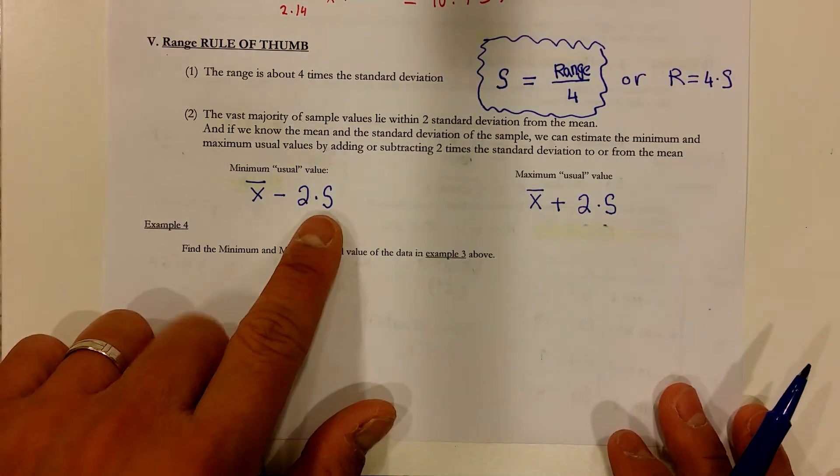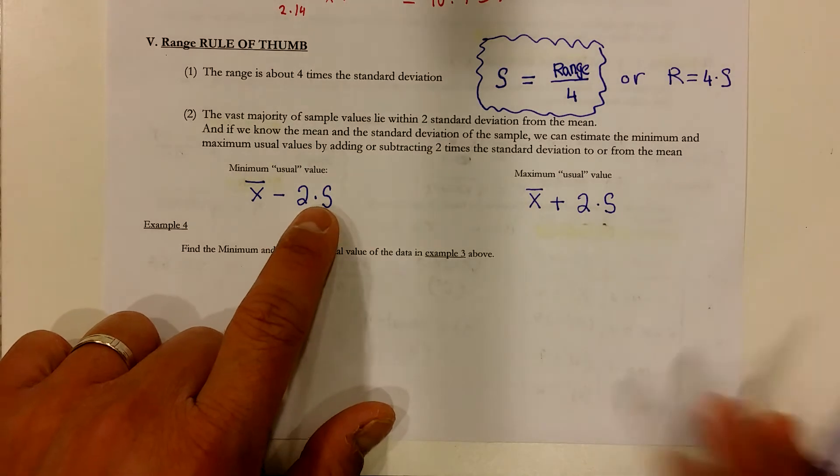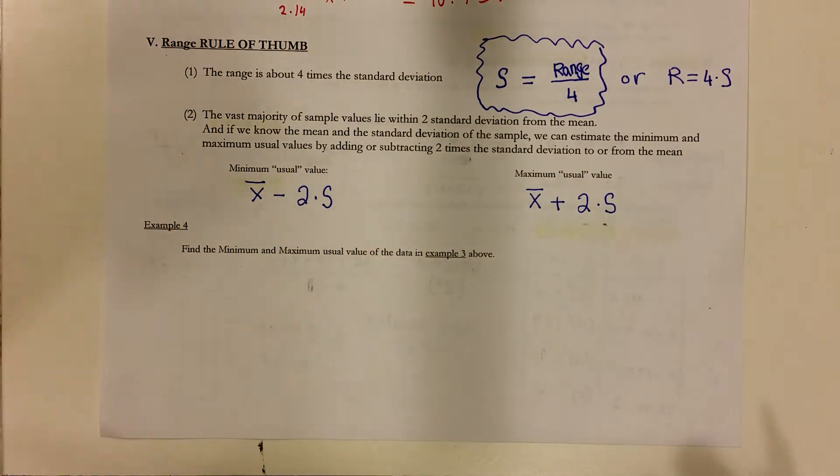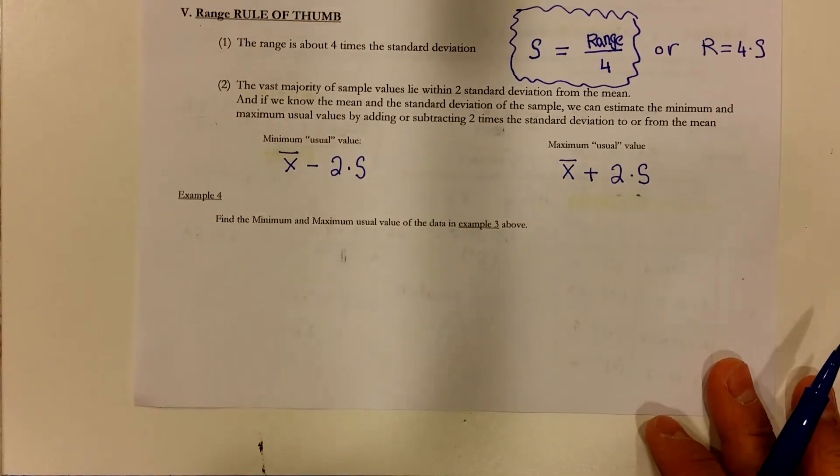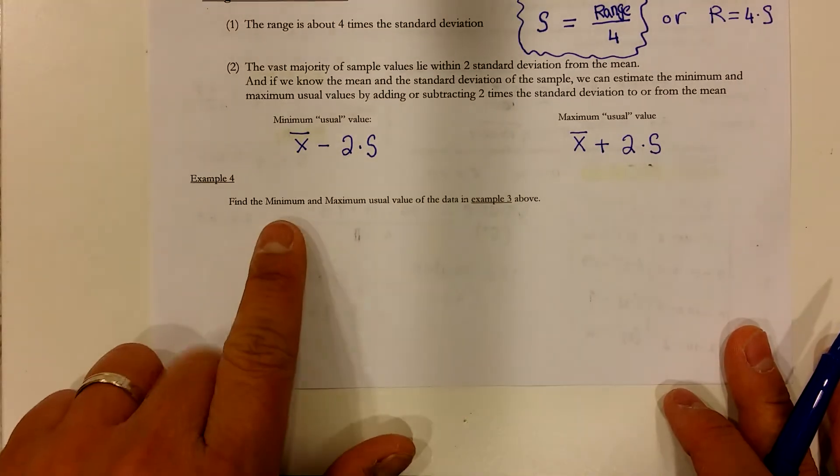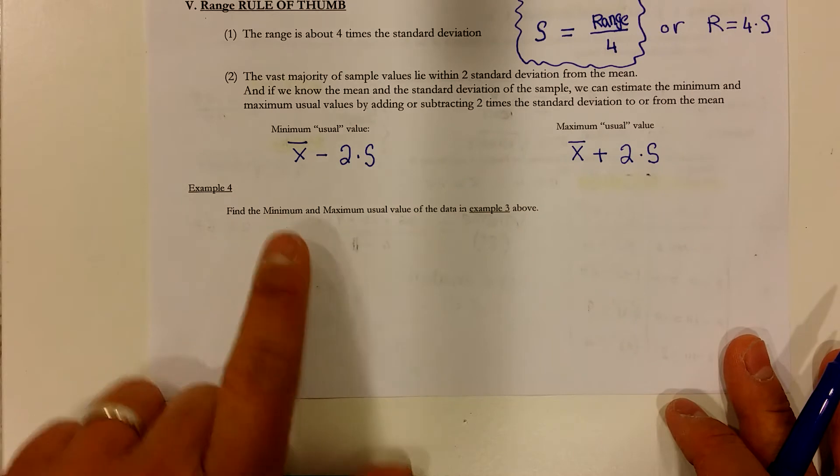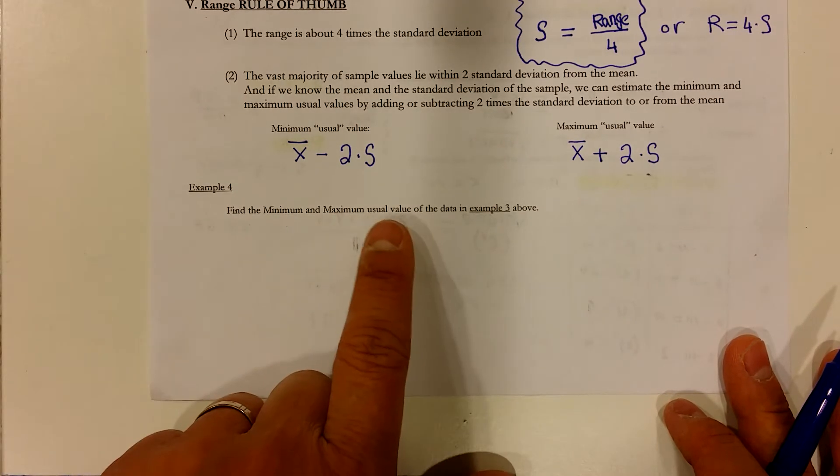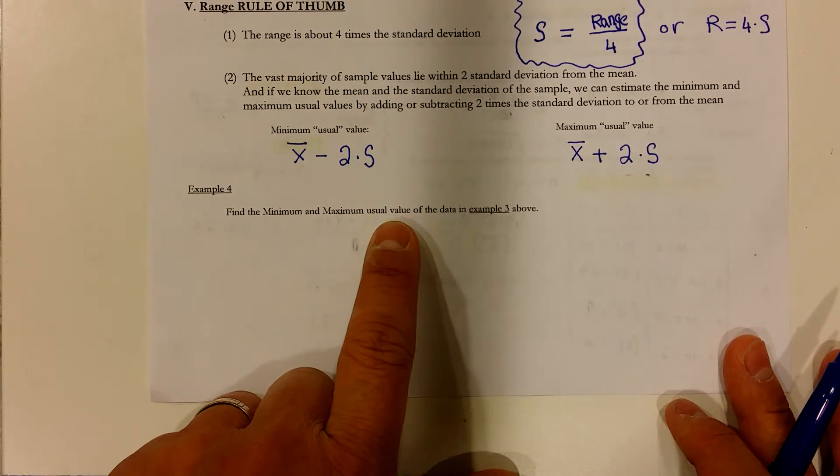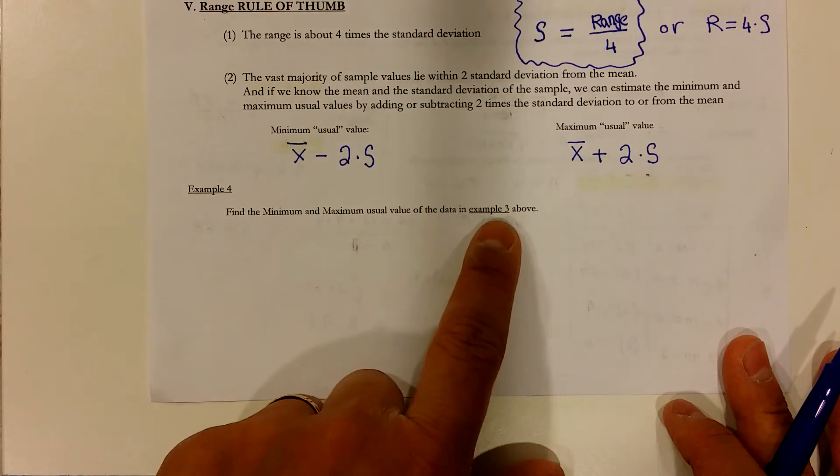Another way of saying 2 times the standard deviation is to say double the standard deviation because double means you multiply it by 2. So, let's work on a problem where we're asked to find the minimum and maximum usual value. Usual means acceptable value in the data above.